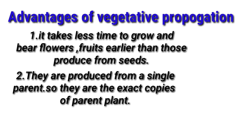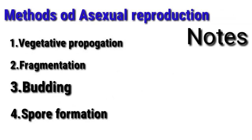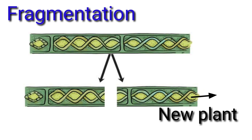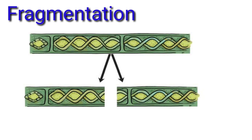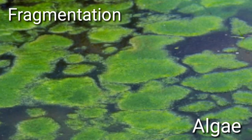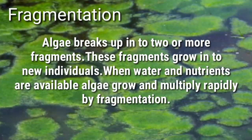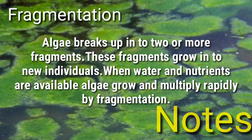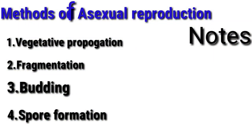The second method is fragmentation. Fragmentation means splitting. If you split the organism into fragments, each fragment will grow and develop. The example in our textbook is algae. Algae break up into two or more fragments, and these fragments grow into new individuals. That is fragmentation.